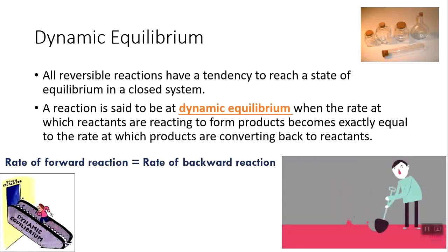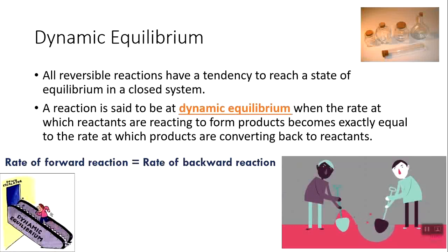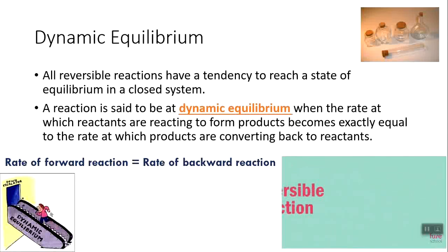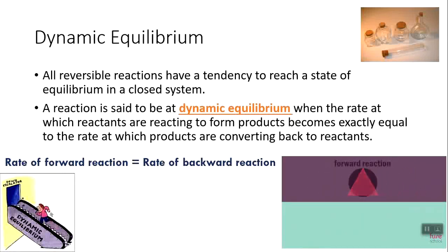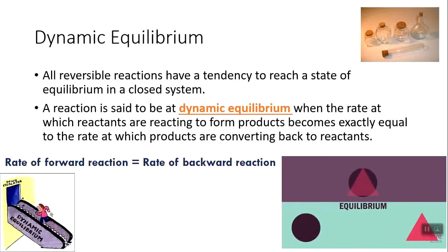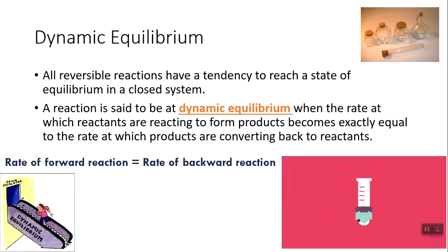Imagine you are digging a hole, and as you are digging it, your friend is refilling it. If you dig faster, the hole gets larger. If your friend fills faster, the hole gets smaller. But if the two of you are working at the same speed, there's no change to the size of the hole. The same concept applies to a reversible reaction: if the rate of the forward reaction equals the reverse reaction, the reaction is at equilibrium — called dynamic equilibrium because both processes occur simultaneously even though there is no overall observable change.